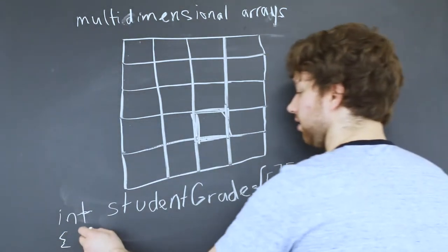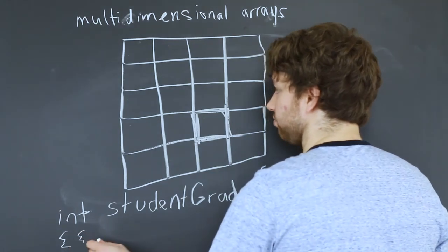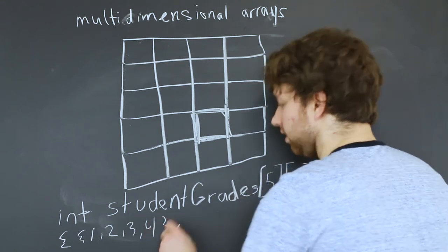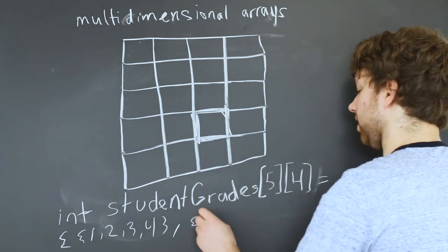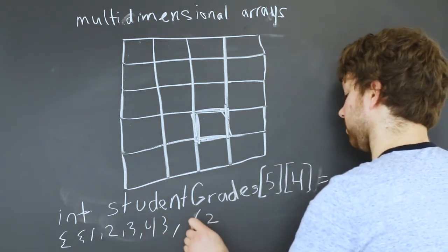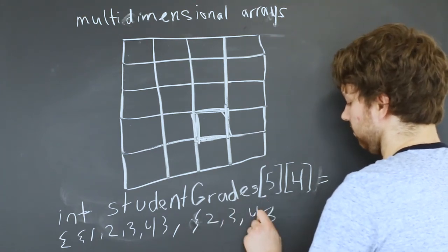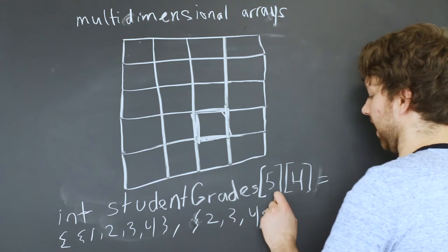Inside of the curly braces, you would define each row with curly braces. So you do something like this: comma, another set - curly brace two, three, four, eight. These students did really bad because grades are out of 100. Comma, and you could do that for each row.